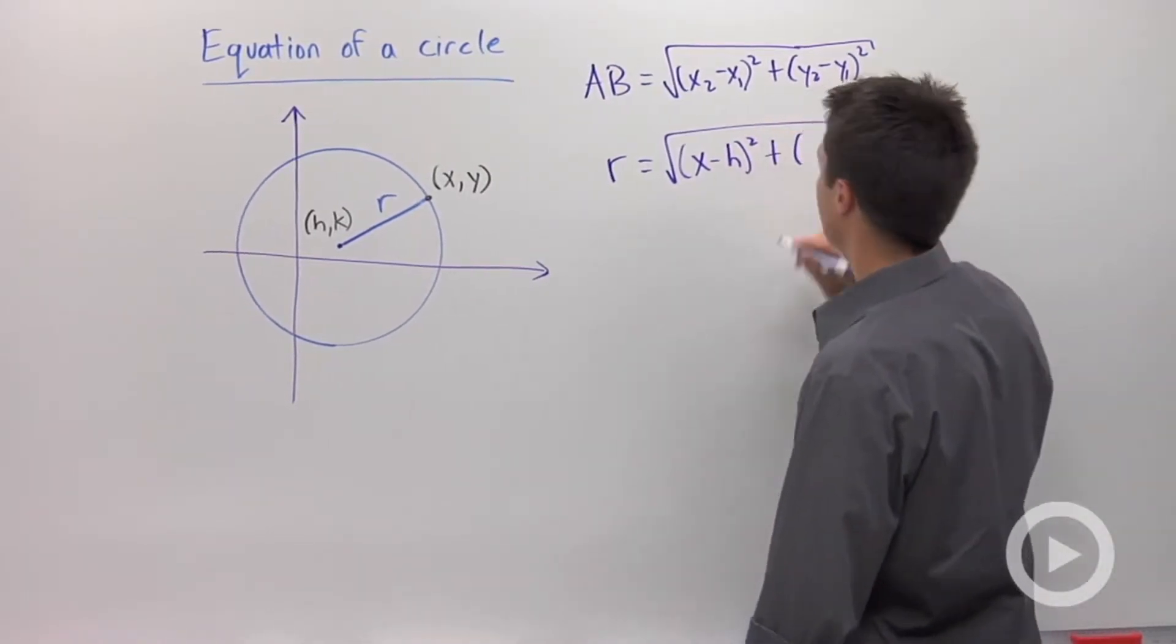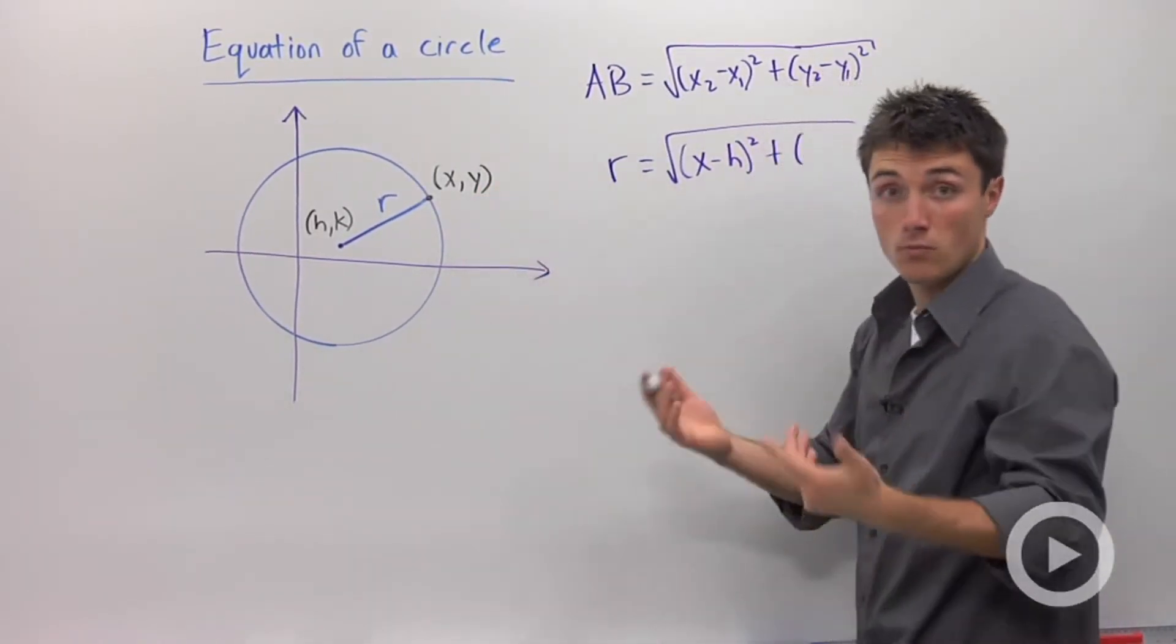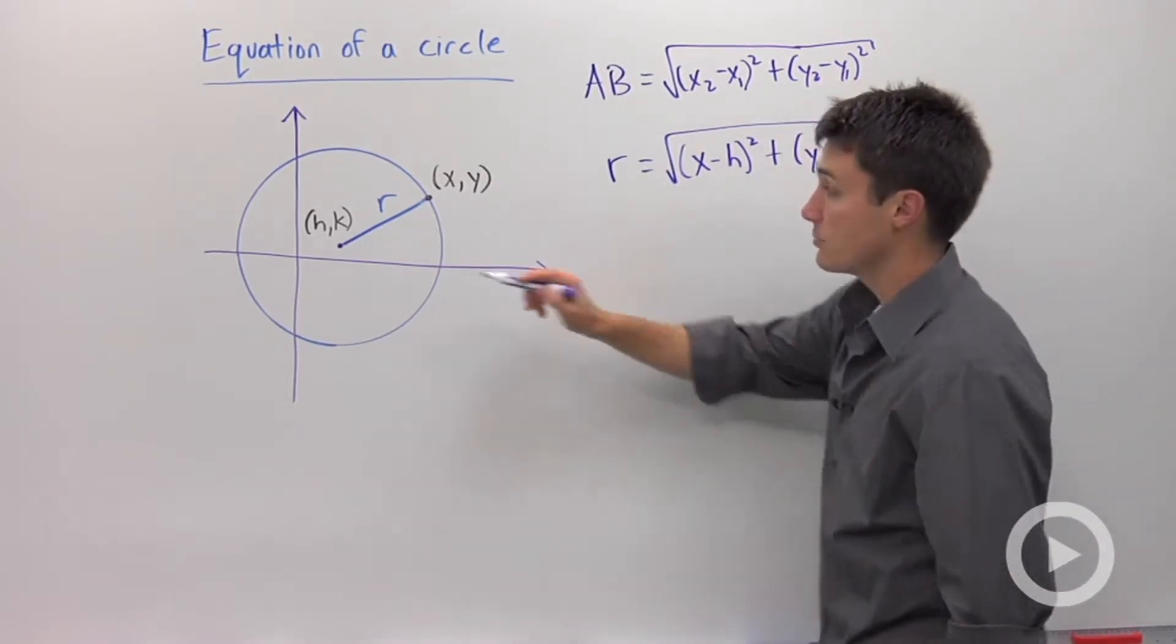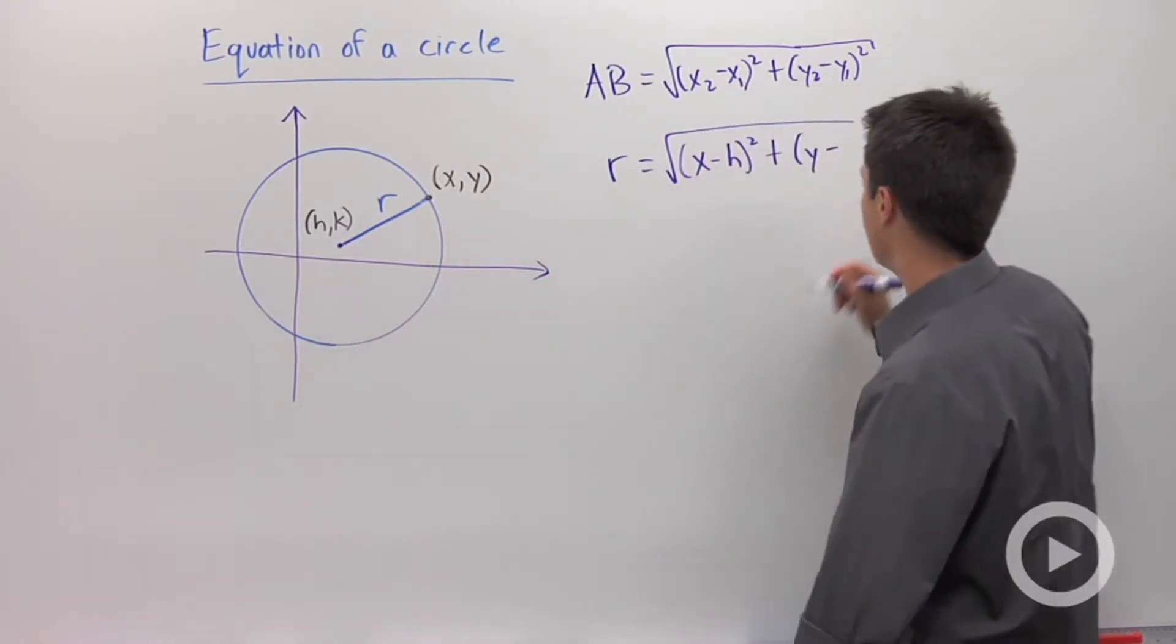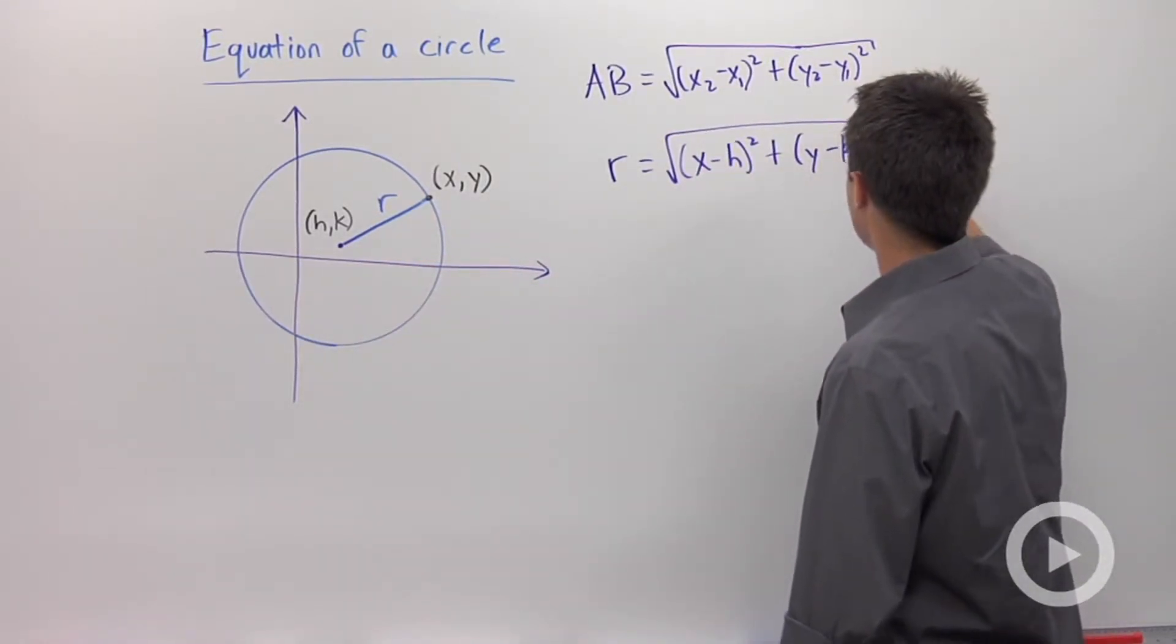Now let's look at our y's. Our y2 is y, and I'm going to subtract k, because k is the y-coordinate of the center of my circle. And I'm going to square that.